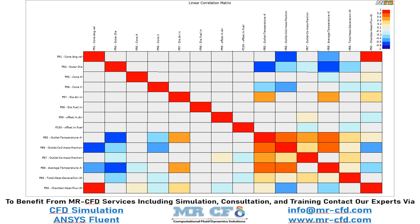In the second part, the steps to performing direct optimization are shown, in which we will first generate the design points needed for the optimization process, and then by defining desired targets such as maximizing the value of heat generation rate while minimizing the amount of formed pollution, the software will start the optimization process and will provide you with the best three candidate points.